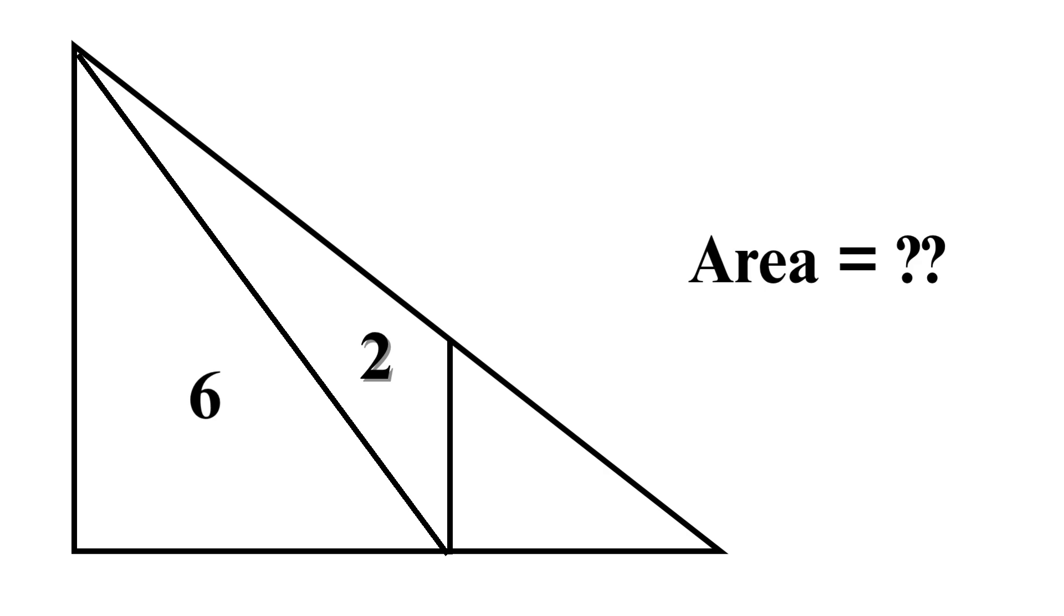Let's label the vertices of our big triangle as A, B, and C. Next, we label the intersection point between the perpendicular and the base as D, and the intersection point between the perpendicular and the hypotenuse as E.